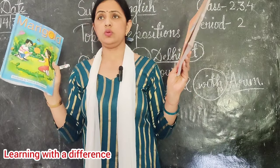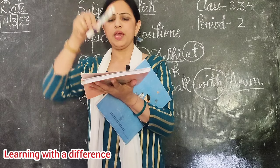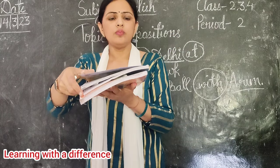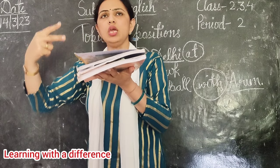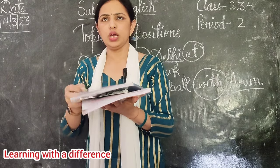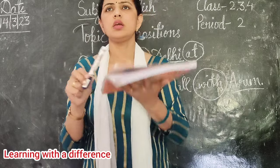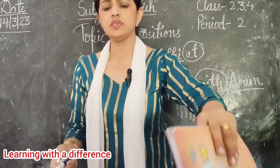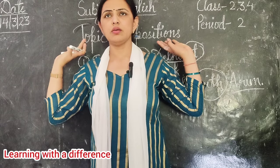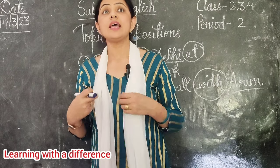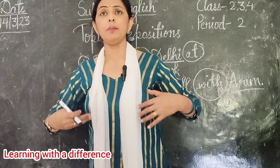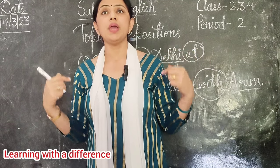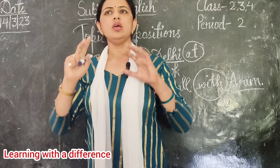Now I have two books. See what ma'am is doing — the pen is here, and again a book is placed on top. Where is the pen now? The pen is in between the books. Very good. Now — the pen is in front of the book. And ma'am is standing here; the board is there behind ma'am. So where is ma'am? I am in front of the blackboard. And where is the blackboard? The blackboard is behind me.